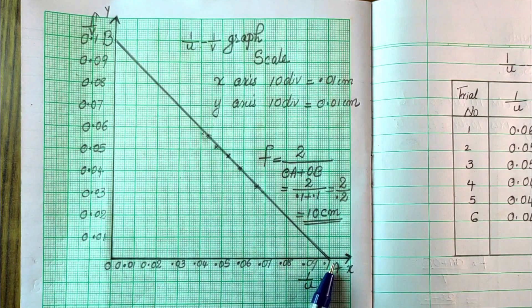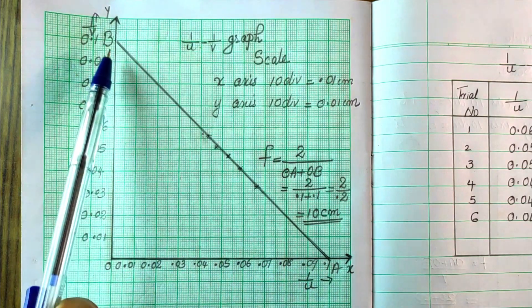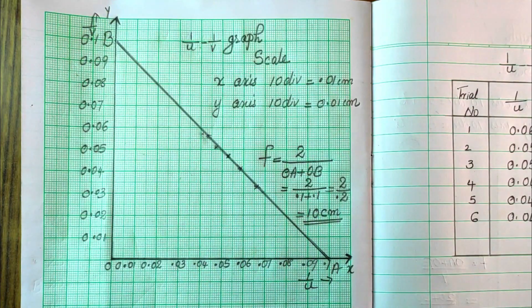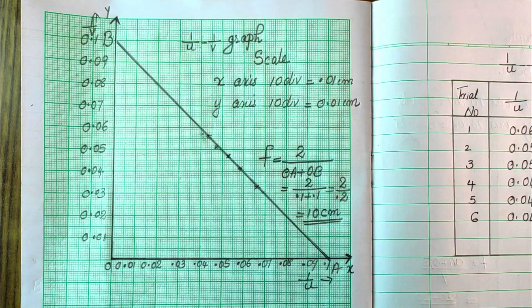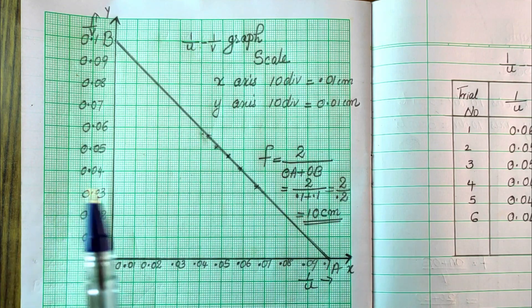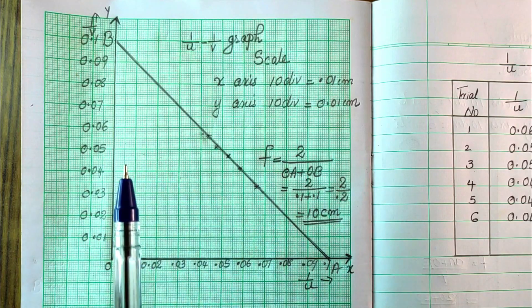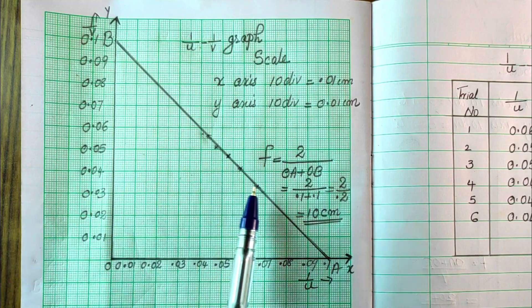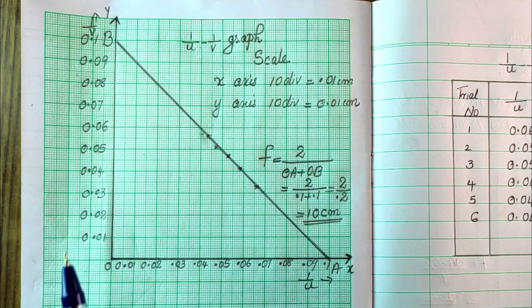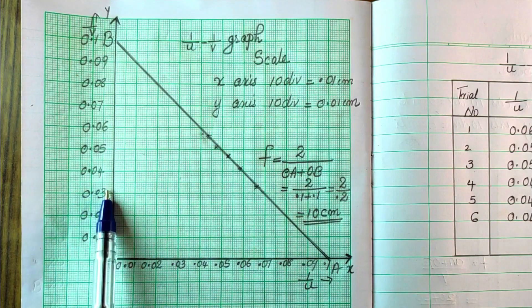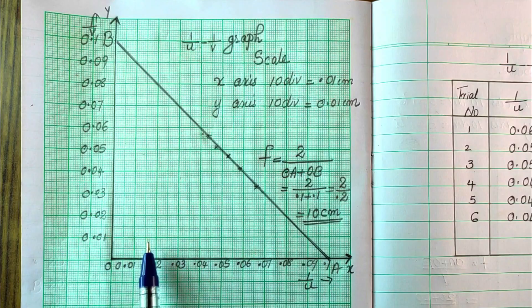The focal length equation for the 1/U vs 1/V graph is F = 2 divided by (OA + OB). Using OA = 0.1 and OB = 0.1: F = 2 / (0.1 + 0.2) = 10 cm. The focal length from the 1/U and 1/V graph is 10 cm. Thank you.